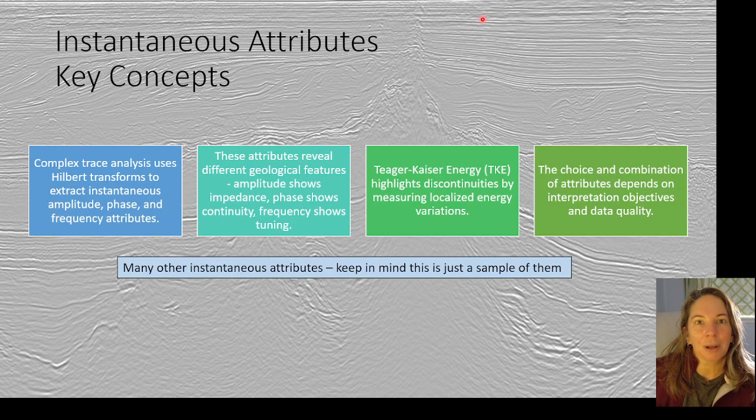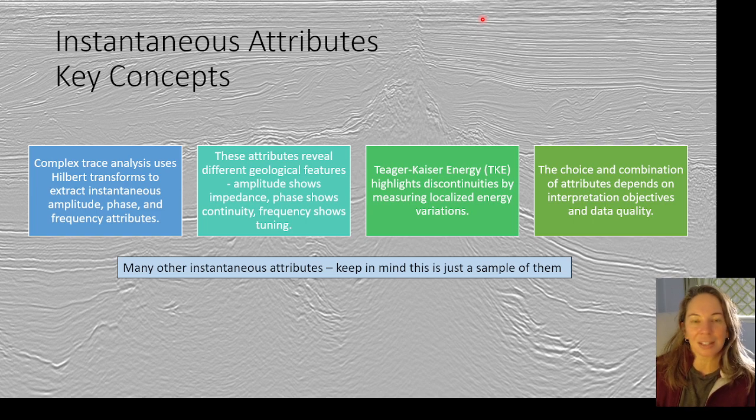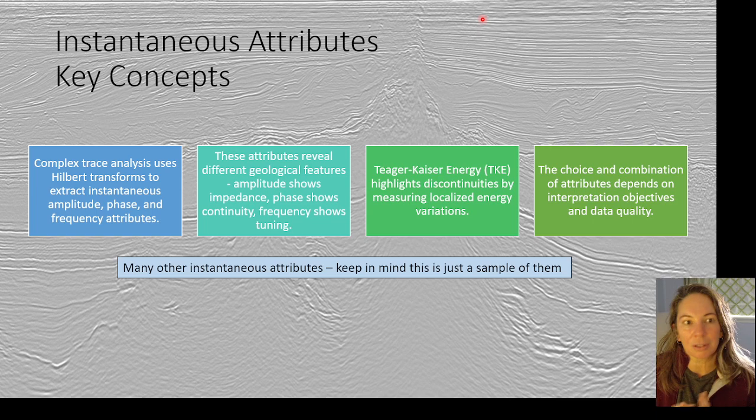And so just to wrap up, with a couple of thoughts about instantaneous attributes, I only covered a few of them. There's a lot more that I like. Recently I've really been into Tiger Kaiser energy. So it's amazing for helping pull out different geologic features. And I've got more examples of that up on my website and also elsewhere on the YouTube channel.